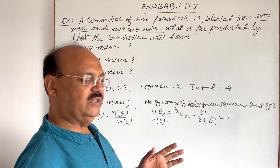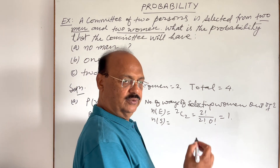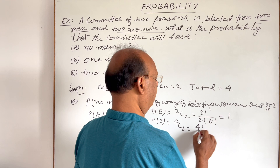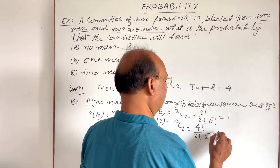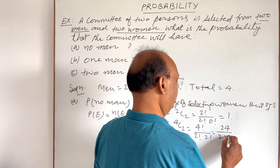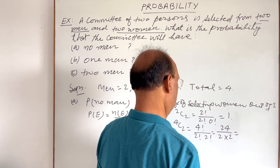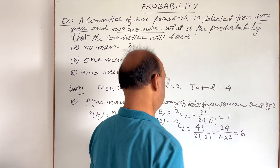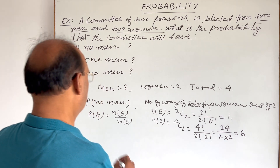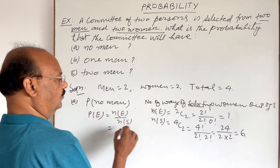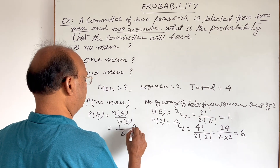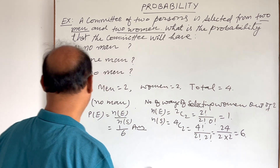Similarly we find N(S): total sample space has 4 persons — 2 men and 2 women — and out of these 4 we select 2, which is 4C2. This equals 4 factorial by 2 factorial into 2 factorial, which is 24 divided by 4, equal to 6. So N(E) = 1 and N(S) = 6, therefore the probability is 1/6.